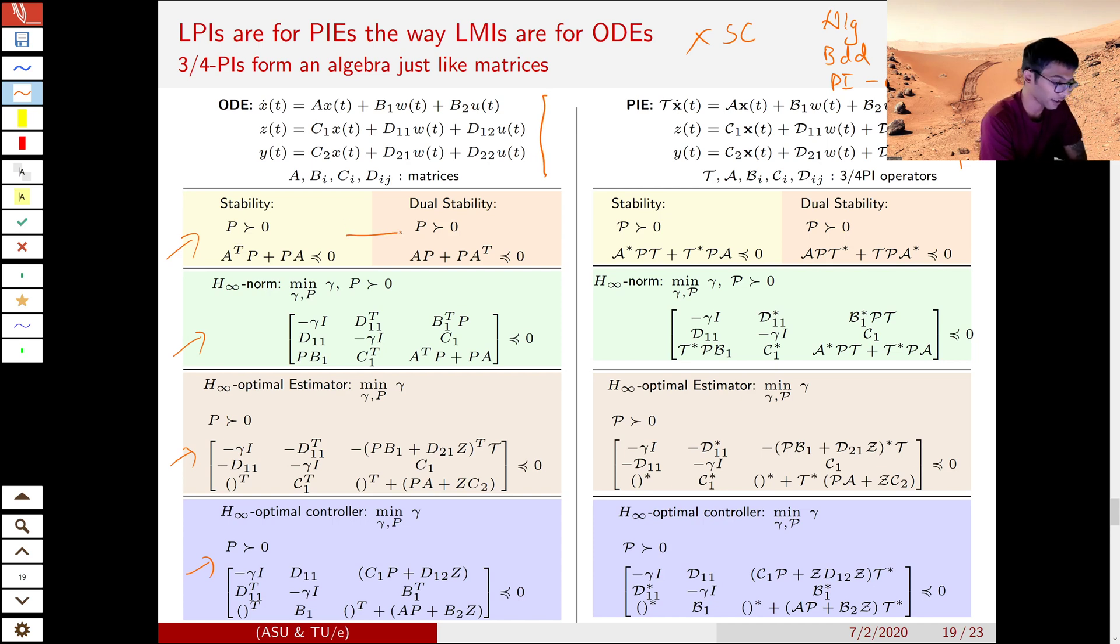So we can extend these results directly for PIEs as well. So in case of ODEs, we had LMIs with matrix constraint. In case of PIEs, we have LPIs with PI constraint. And we already know how to solve an LPI.